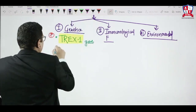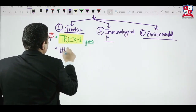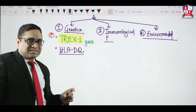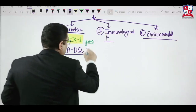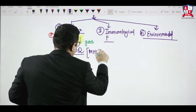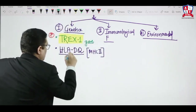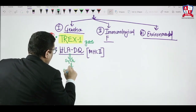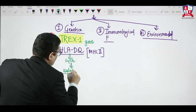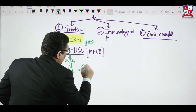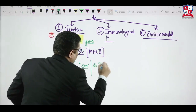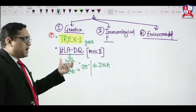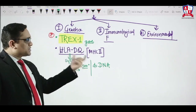Other genes associated with SLE include HLA-DQ, which is an MHC class 2 molecule. HLA-DQ is responsible for synthesis or formation of autoantibodies such as Smith antibodies or double-stranded DNA antibodies.